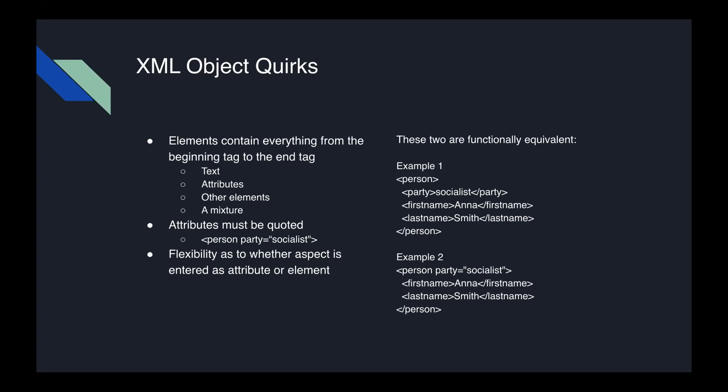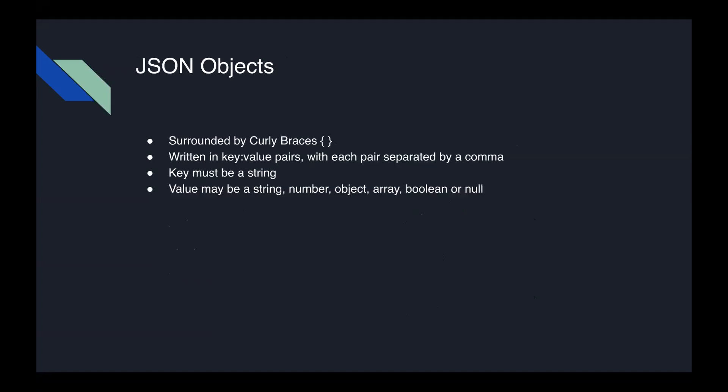Every attribute must be quoted in XML, and you can enter some aspects as an attribute or as an element. For example, we have Anna Smith who is a socialist — we can either put her party affiliation inside the element or create a separate element for it. Both result in the same data. JSON objects are somewhat less quirky. As long as you include it in curly braces you should be okay, with key-value pairs separated by a line or separated clearly with a comma in between.